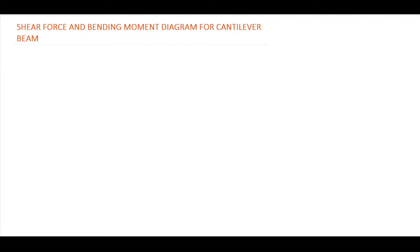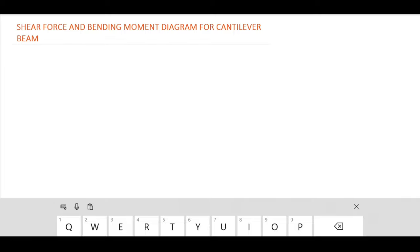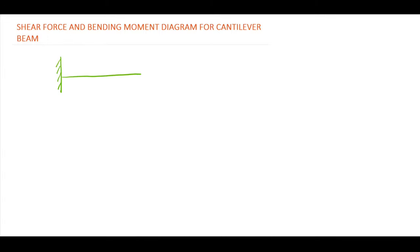In this lecture we will discuss shear force and bending moment diagrams for cantilever beams. Consider a cantilever beam fixed at one end with a point load W on the free end. At any section XX at distance x from the free end, the shear force is equal to the algebraic sum of all forces on one side. Considering the right side, we have only one force W acting downward, which is positive.